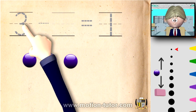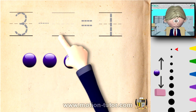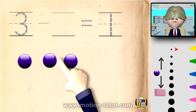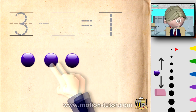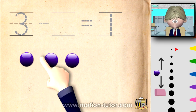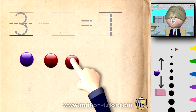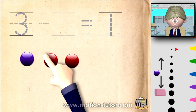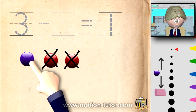So we have 3 — here are the 3 marbles — and we're going to take away some, and we're going to have one left over. We have one, two, three. To have one left over, these two have to be gone, so these two have to be taken away so we can have this one left over.